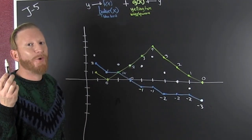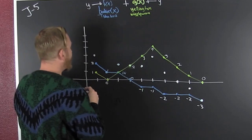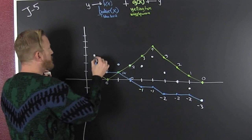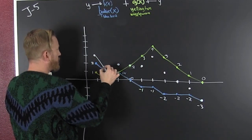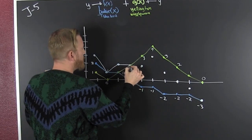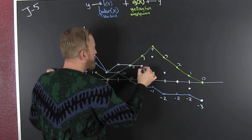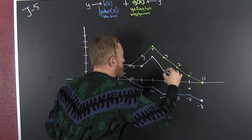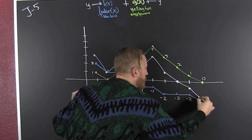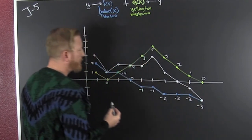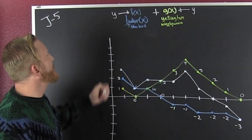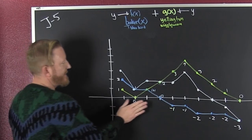Now we take out Mortimer, and we connect those dots. We connect those dots and we have the sum of Booker T and Yellington.